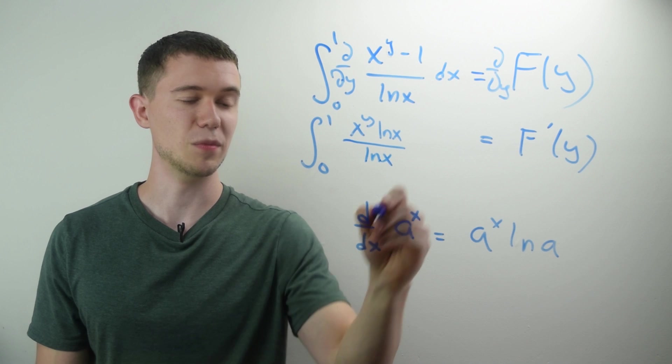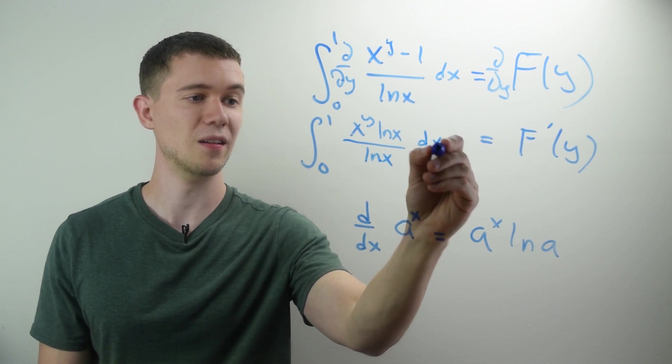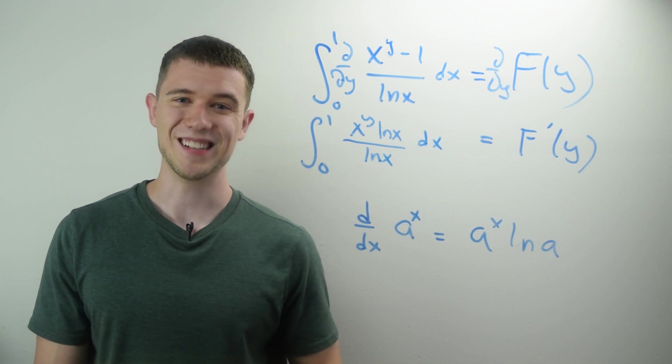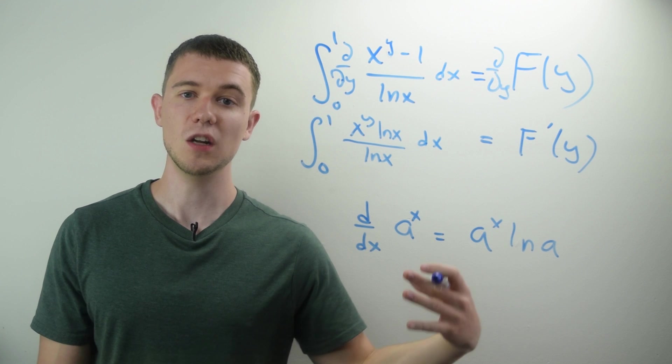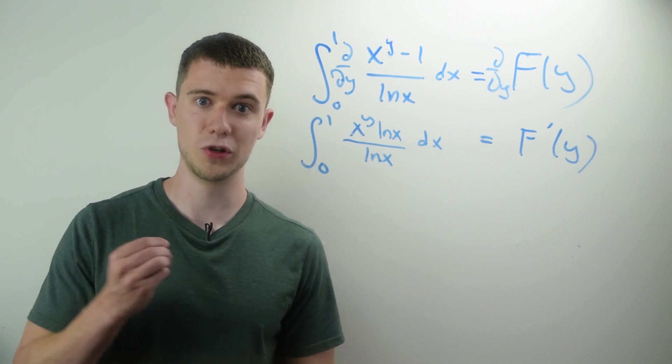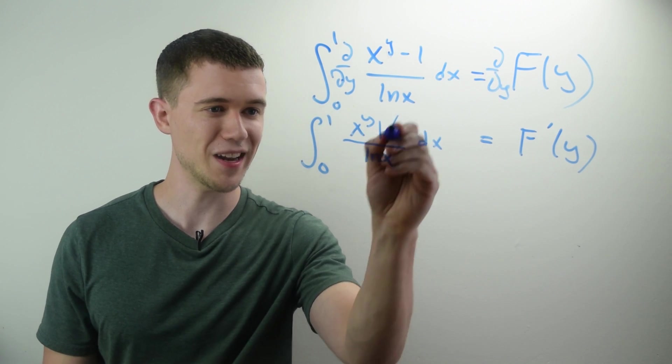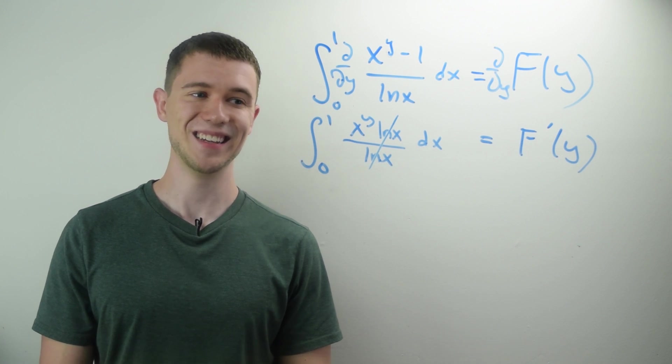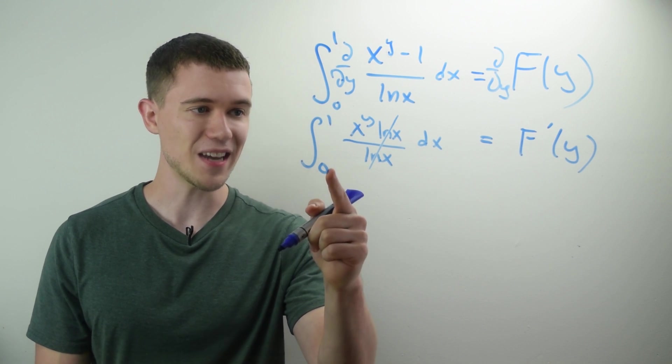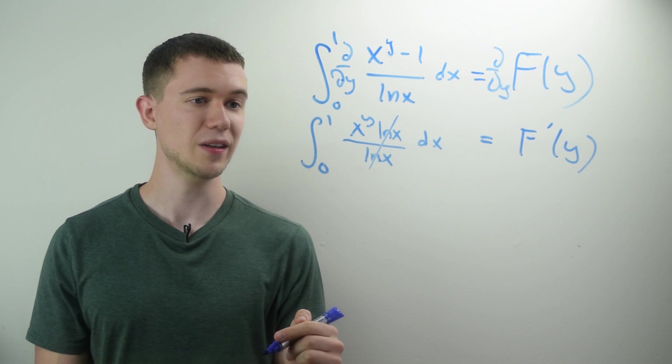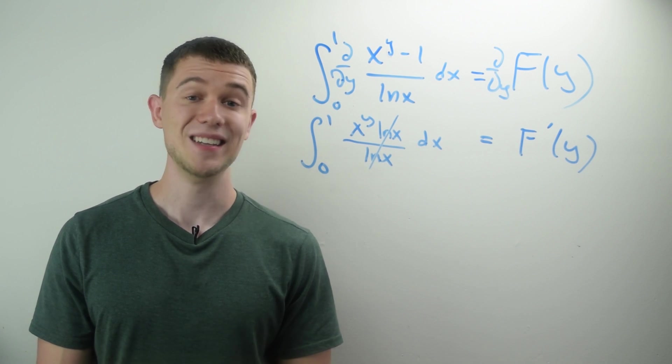And we have over ln of x, because ln of x was a constant. And so that's how that works. That's the differentiation under the integral sign. Well would you look at that? Isn't that convenient? We can now have those natural log of x's cancel, and I just have the definite integral from 0 to 1 of x to the y dx.